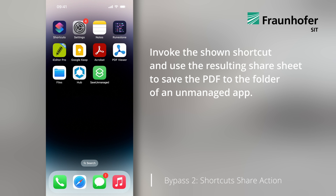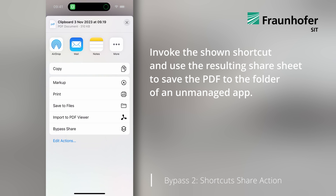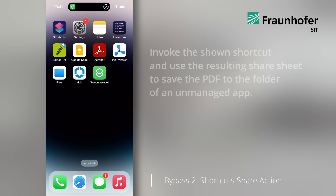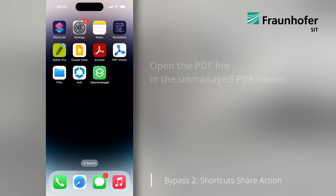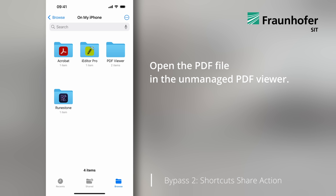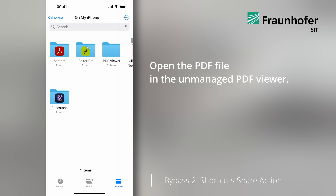Now, we simply invoke the shown shortcut and use the resulting share sheet to save the PDF to the folder of an unmanaged app. The MDM restrictions should have prevented this, as we now can open the PDF file in the unmanaged PDF viewer.